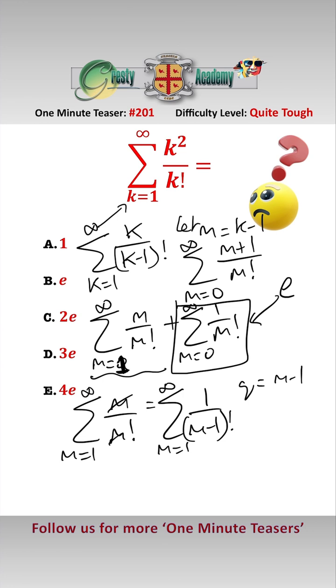and using the same trick, q equals m minus 1, that gives us the sum between q equals 0 and infinity of 1 over q factorial, and we've already established that that equals e,